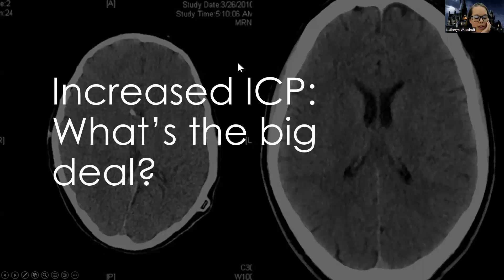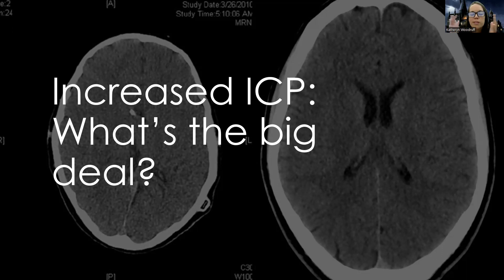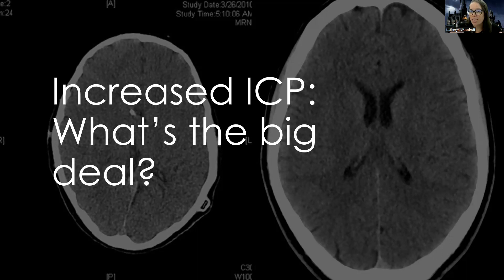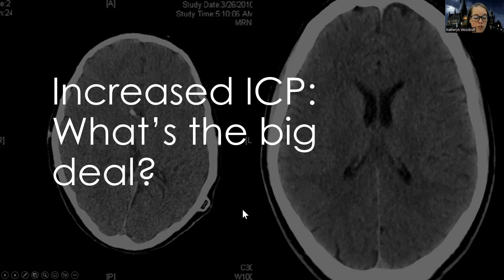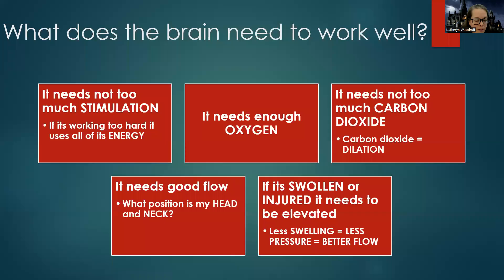Let's talk about increased ICP. The big deal here is that your brain is in your skull, which has a limited ability to stretch. When the brain cannot expand outward, all it can go is down — and when it goes down, it puts pressure on the brain stem, which controls breathing function. This is where we talk about brain death. Too much pressure on the brain stem means those basic functions — breathing, living, surviving — can ultimately be lost.